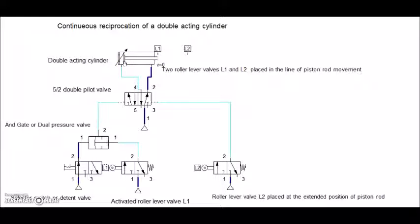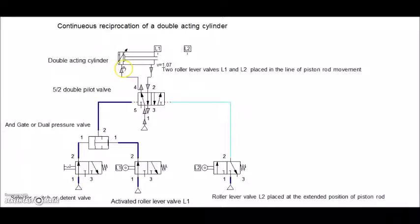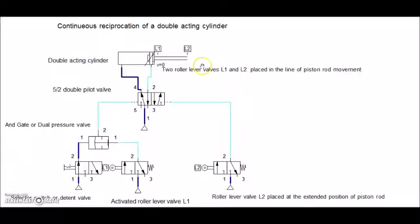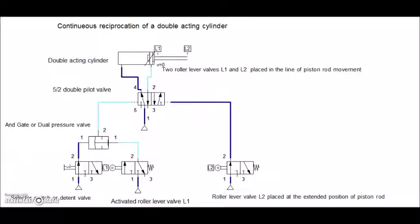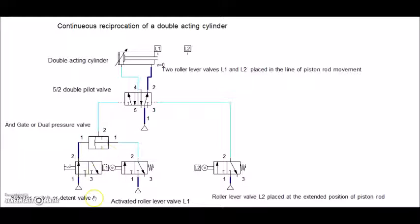The piston rod would return. As it returns, it would again press L1 and this signal comes and it would change the actuating position of 5x2 double pilot valve and the air would go and press on the other side of the cylinder to make it extend. This is kept on till finally we press the selector switch again.